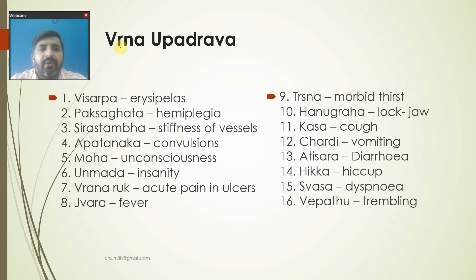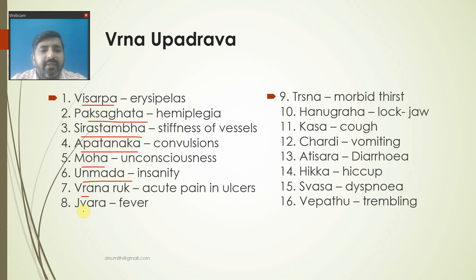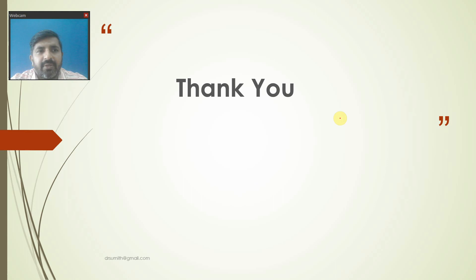Coming to the Upadrava or complications that an ulcer can have: Visarpa (spreading skin disease), Pakshagadha (hemiplegia), Shira Stambha (stiffness of vessels), Apatanaka (convulsions), Moha (unconsciousness), Unmada (insanity), Vadana Ruk (acute pain of the ulcer), Jvara (fever), Trishna, Hanugraha, Kasa, Chardi, Atisara, Hikka, Shwasa, and Vepadu (trembling) - these 16 are the Upadravas. This is important for MCQs so please memorize these things, and in case of any queries we will meet up and discuss in the discussion forums.